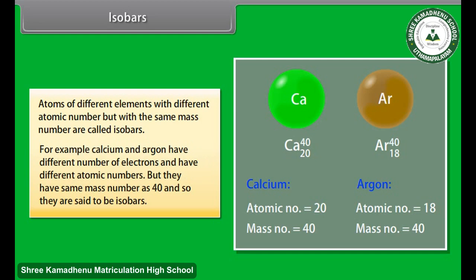There are three isotopes of hydrogen. But they have same mass number as 40, and so they are said to be isobars.